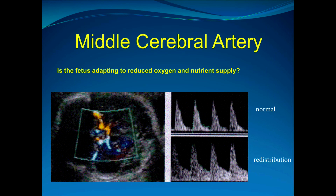This shows the fetus adapting to reduced oxygen and nutrient supply. The waveform on the right above is normal, and the waveform below shows redistribution. You will note that it's the exact opposite of what you have with the umbilical artery — there is an increase in flow at the lower baseline, and that is abnormal. So it's the complete opposite to the umbilical artery waveform.